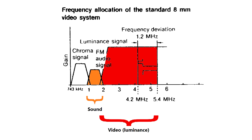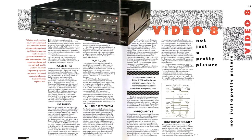This may seem like a gross oversight, but the format, originally intended for camcorders, needed all the bandwidth it could have for the video. In 1985, Sony introduced pulse code-modulated digital audio.